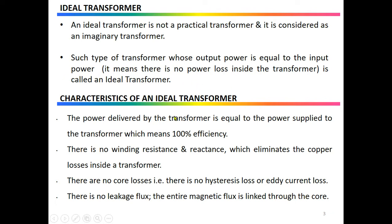The characteristic features of the ideal transformer are as follows: the power delivered by the transformer is equal to the power supplied to the transformer, hence efficiency is 100%. This is only possible when there is no loss inside the transformer windings — no winding resistance, no reactance — which eliminates the copper losses. There should be no core loss, no hysteresis loss, and no eddy current loss. Furthermore, the entire magnetic flux should be linked from coil 1 to coil 2 with no leakage flux. These features are not achievable with a practical transformer.